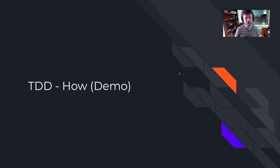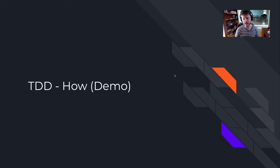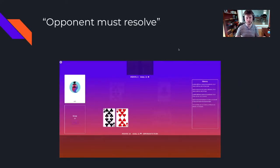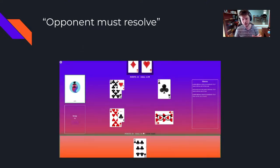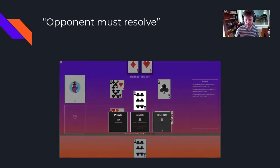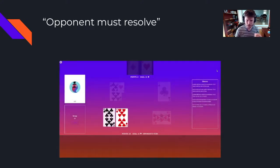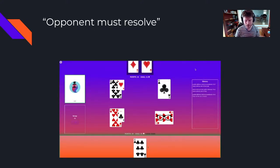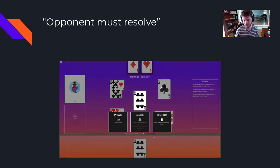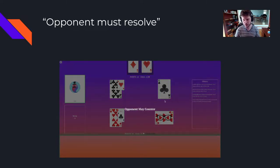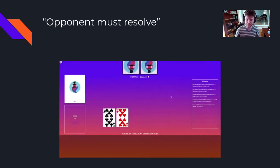Let's look at how to do test-driven development in the context of a demo for a specific Cuddle feature. In the game of Cuddle, you can play these one-off effects — like the six, where you discard a card and get a unique effect based on the specific card you played. In this case, the six is scrapping all the royals and the glasses eights on the field.